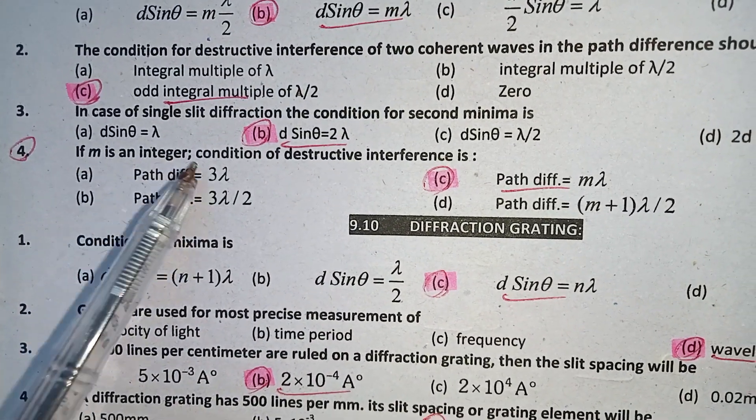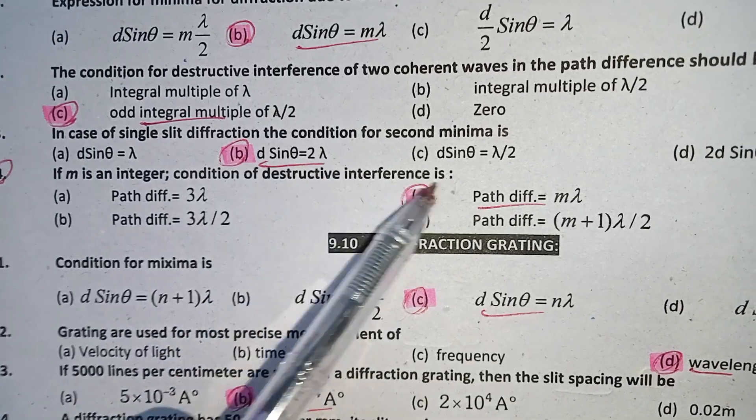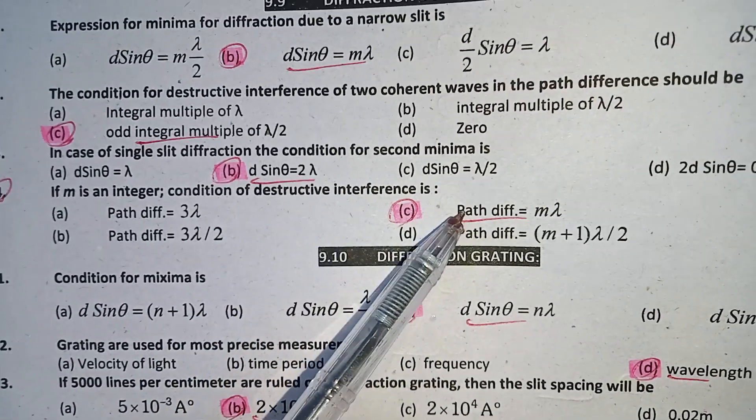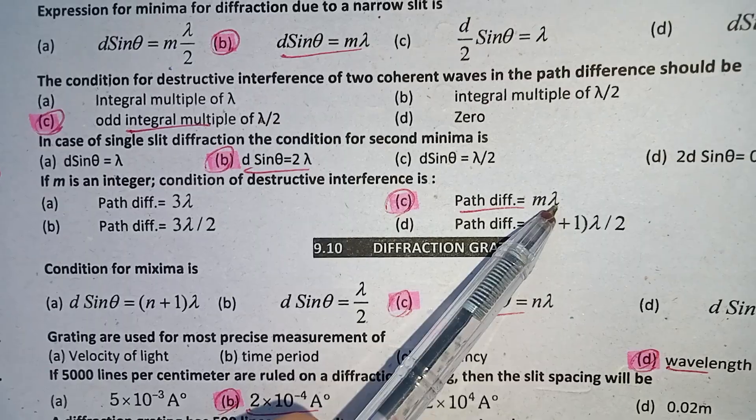According to the formula, path difference is equal to m lambda. C is the right answer. All the best.